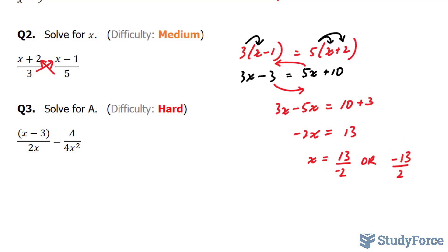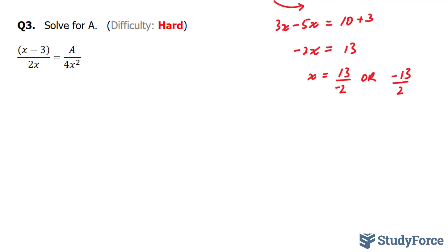In our last question, which is the most complicated question in this group of examples, we have to solve for A, not for x. Once again, we have a fraction on the left side and a fraction on the right side, so we can cross multiply. Multiplying 2x with A gives us 2xA, and 4x squared times x minus 3 gives us 4x squared x minus 3.